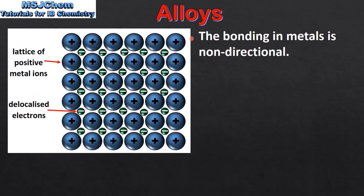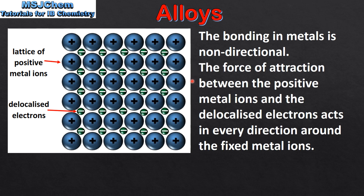The bonding in metals is non-directional. The force of attraction between the positive metal ions and the delocalized electrons acts in every direction around the fixed metal ions. In this diagram we can see the lattice of positive metal ions and the sea of delocalized electrons. The force of attraction occurs all around the positive metal ions. This is known as non-directional bonding.